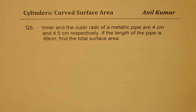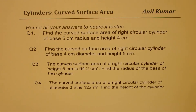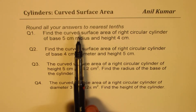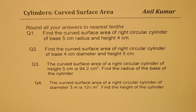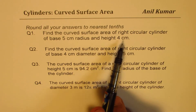You can pause the video and answer this question. Now before this we have four questions to practice. These four practice questions will show you what the formula for curved surface area is and how to work with it. You have to round all your answers to the nearest decimal place. Question number one: find the curved surface area of a right circular cylinder of base five centimeter radius and height four centimeters.